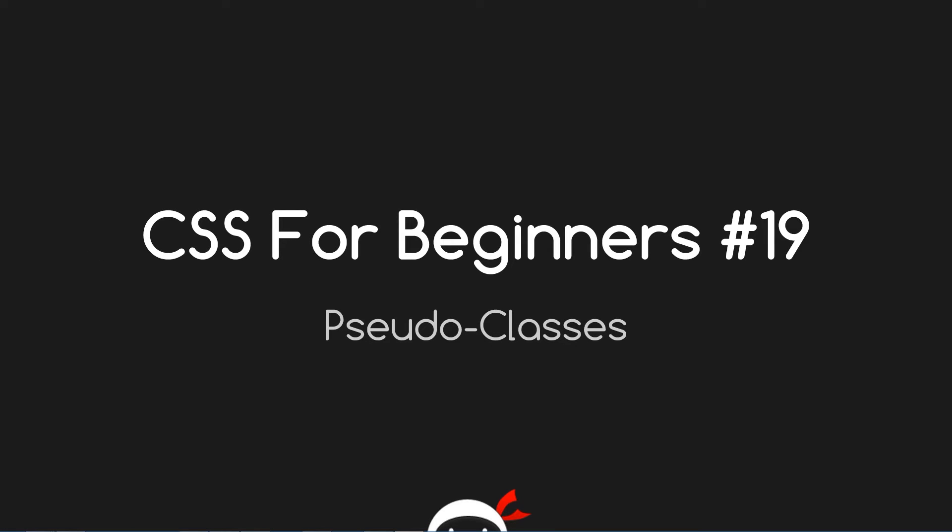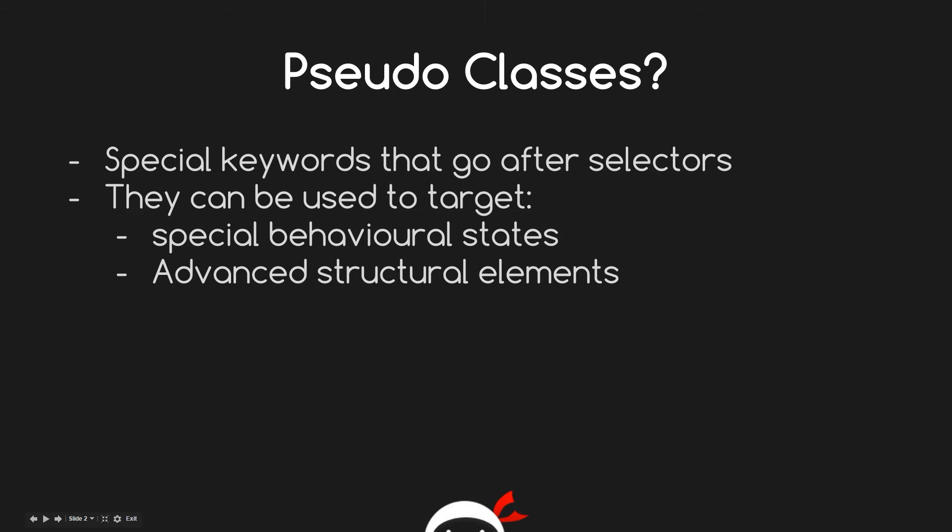Hey guys, this is CSS for Beginners lesson 19. I'm Sean from the Net Ninja and today we're going to talk about pseudo classes. So what exactly is a pseudo class? Essentially, pseudo classes are special keywords that go after selectors — they're like an extension of selectors — and what they do is help us target things we wouldn't normally be able to target with normal CSS selectors. These things could be things like special behavioral states on a web page.